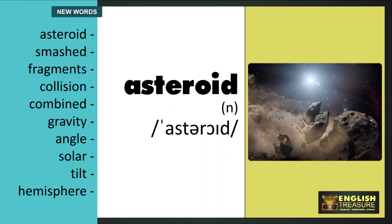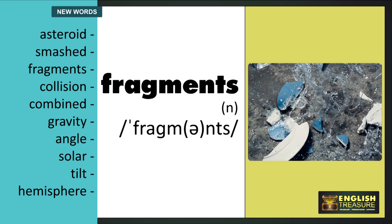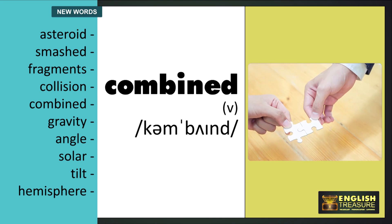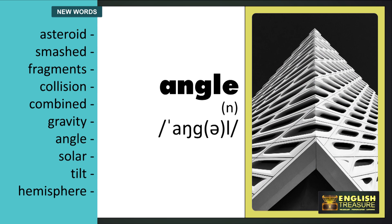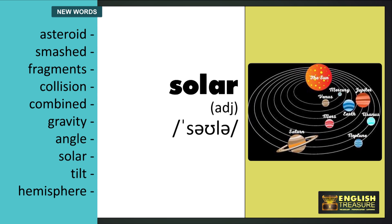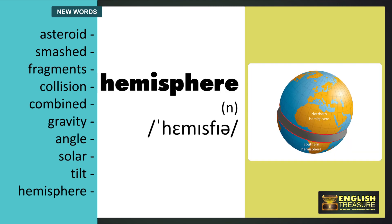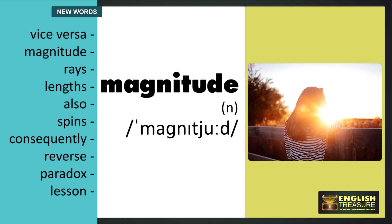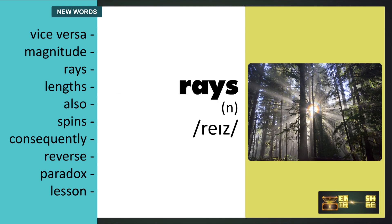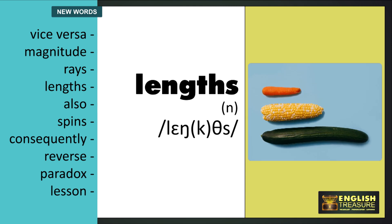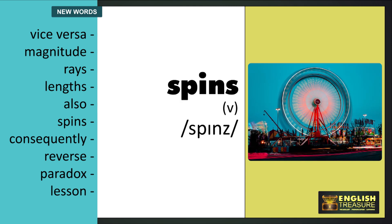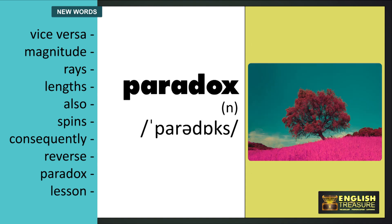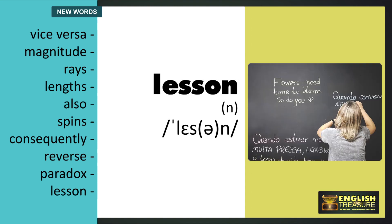Asteroid. Smashed. Fragments. Collision. Combined. Gravity. Angle. Solar. Tilt. Hemisphere. Vice-versa. Magnitude. Rays. Lengths. Also. Spins. Consequently. Reverse. Paradox. Lesson.